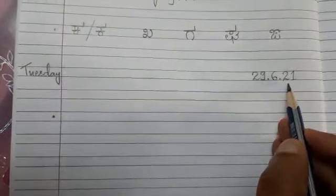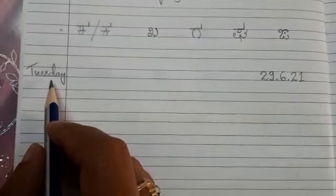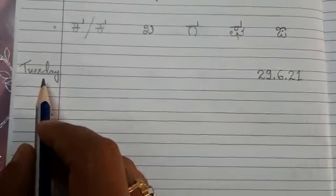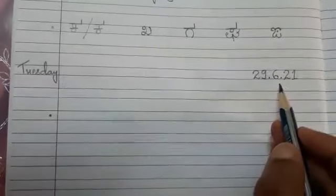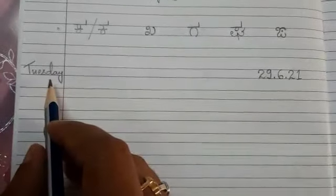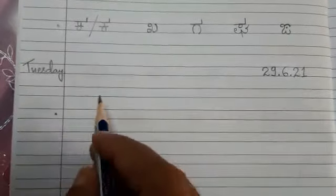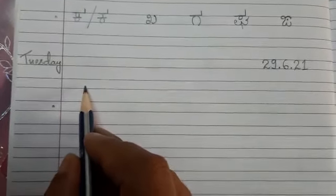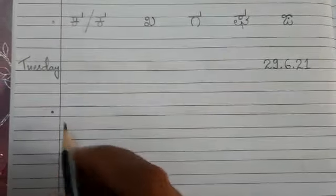6, 21. And today's day is Tuesday. I have to leave one more line again and start in this line.